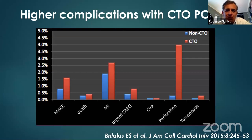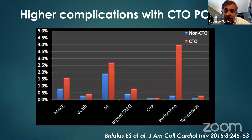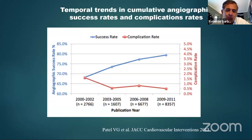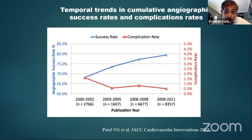CTO PCI procedures are the most complex of all coronary procedures and are related to higher complication rates compared to non-CTO PCI — in terms of MACE, MI, and mainly perforation and tamponade. Experience has changed a lot over the last 15 years, with success rates now exceeding 90%.